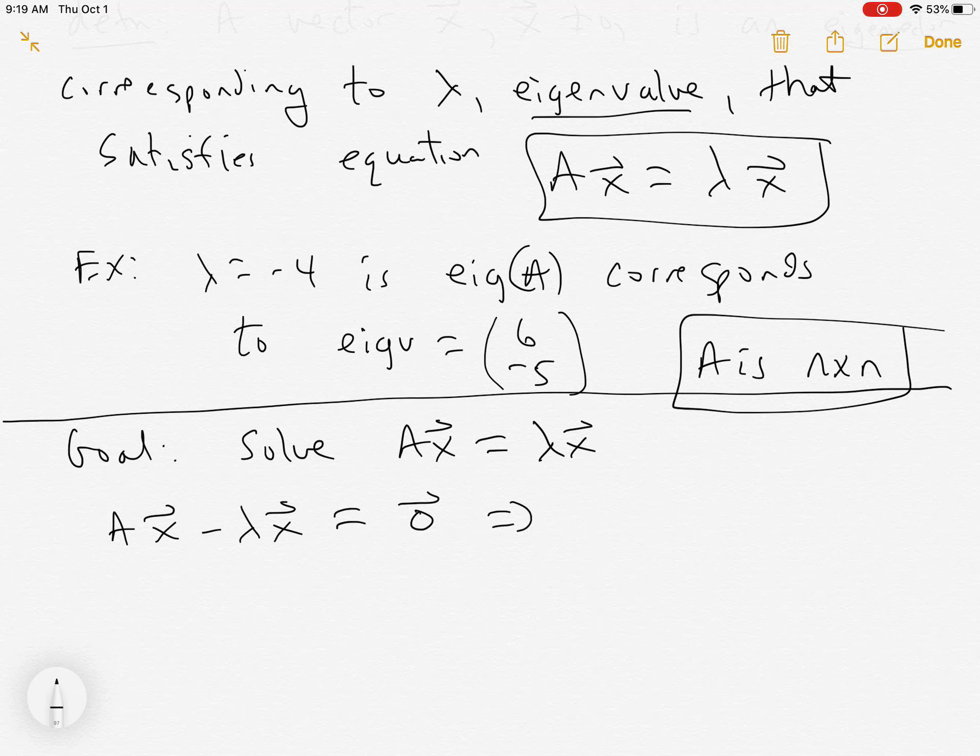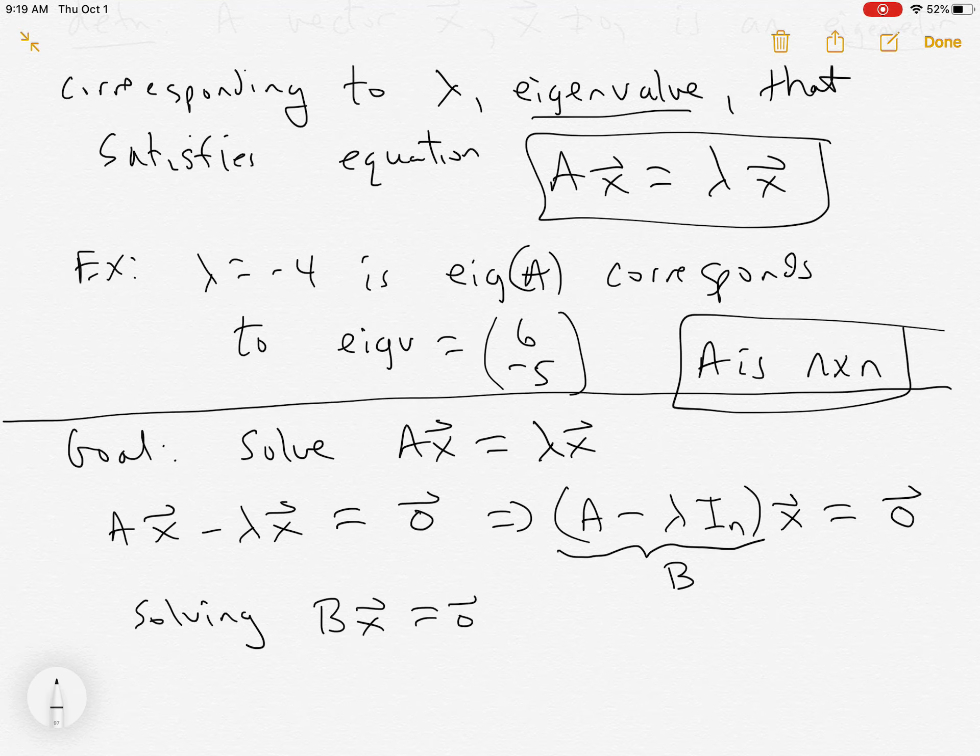And so when you factor the x out, you get (A - λ)x = 0. Now, the weird thing here is that A is n by n, lambda is one by one, and so to make this a matrix, we have to slide in there the identity matrix. So this is a matrix. We're going to call it B. And what are we solving here? We're solving the matrix equation Bx = 0, or even better, we're looking for the null space of B.